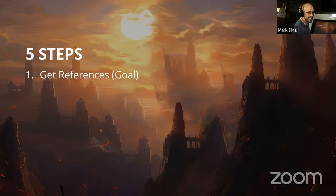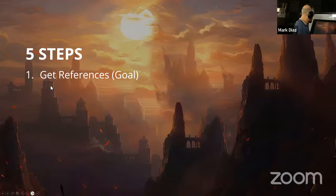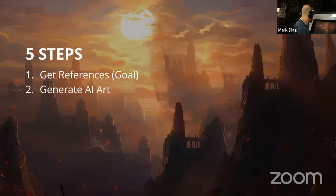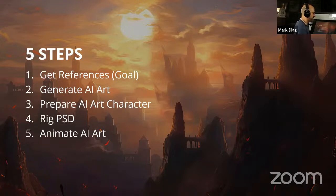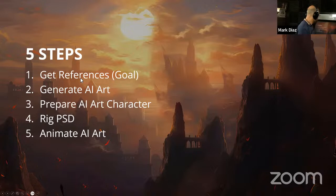I used ChatGPT to give me ideas, but the initial idea was something I already wanted to do. Then I get references — images from the internet. I want to create something like this, and then I generate that AI art, take that image and prepare the AI character. Once it's prepared, I rig the PSD, and finally I do the animation. So I want to start with Step 1: the references.